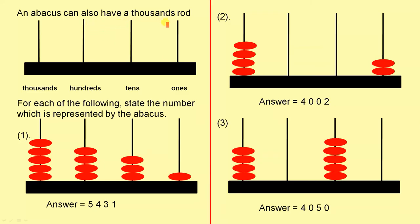An abacus can also have a thousands rod. So we've already seen the ones rod, the tens rod, the hundreds rod. We can also have a thousands rod.